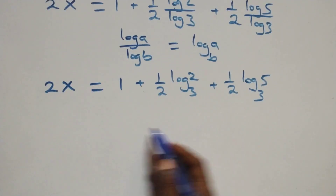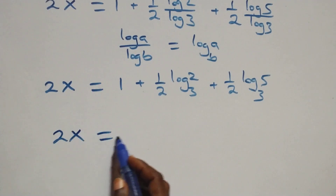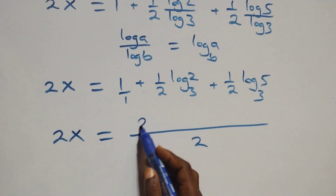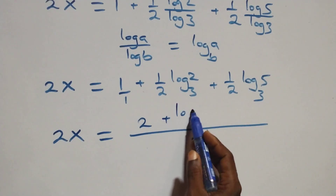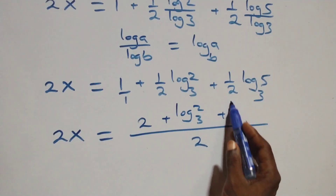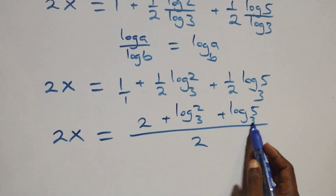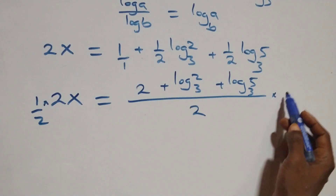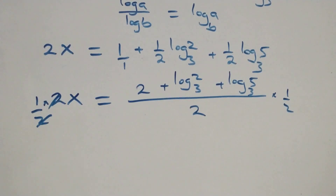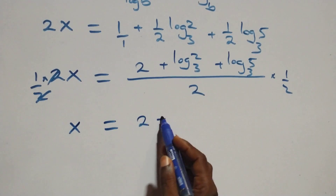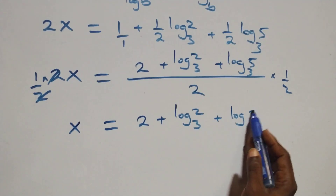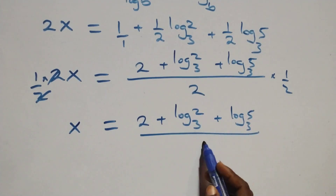We bring this together as one fraction with denominator 2. We have 2x equals (2 plus log 2 base 3 plus log 5 base 3) over 2. Then we multiply both sides by 1 over 2. The 2s cancel each other, and we have x equals (2 plus log 2 base 3 plus log 5 base 3) all over 4.